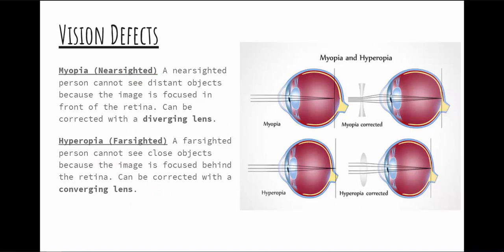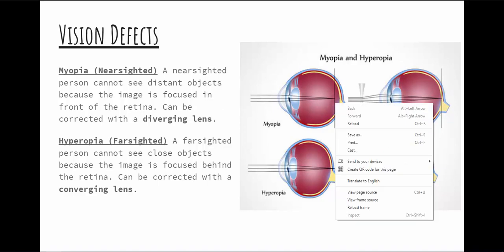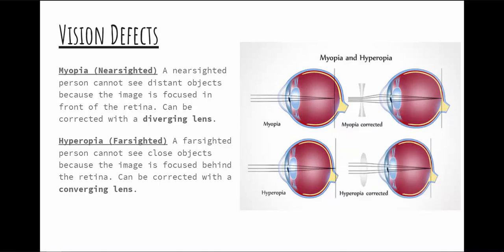There are two basic vision problems: myopia and hyperopia. Myopia, or nearsightedness, is where the light comes through your lens and gets focused in front of the retina — so what the retina picks up is no longer focused. We can fix this with a diverging lens. Hyperopia, or farsightedness, is where the light focuses behind the retina — it's too far — and we fix that with a converging lens.